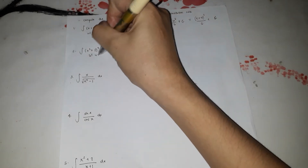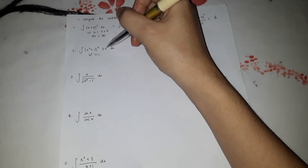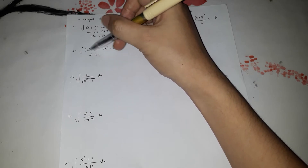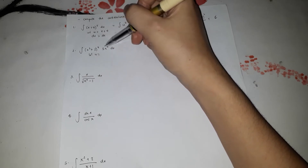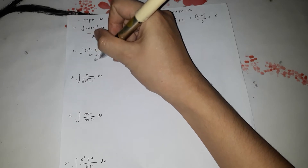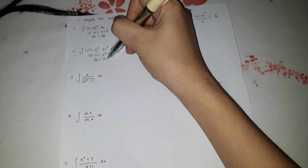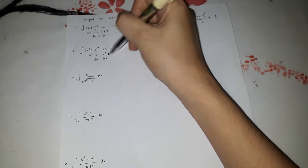For number 2, if you try to solve directly, you cannot easily find the answer because there are two separate quantities involved. So let u be x to the 5 plus 2, and then find du. The derivative gives: copy the exponent, 5x to the 4 plus 0, dx. So du equals 5x to the 4 dx.